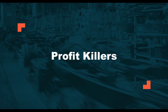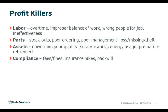So what are the profit killers? I'm going to break them down into four buckets. Labor: it's all about overtime, but also improper balance of work or not having the right people or contractor for a job. Parts: the dreaded stockouts — missing that critical spare part when you have downtime — plus poor ordering, poor management of parts, loss, and theft. Asset-related profit killers: unexpected unplanned downtime is the king, plus poor quality or scrap and rework, too much energy usage because of poorly maintained assets, and premature retirement of assets. Finally, compliance: fees and fines, insurance hikes, and associated bad will.